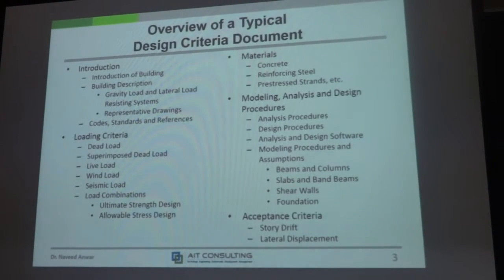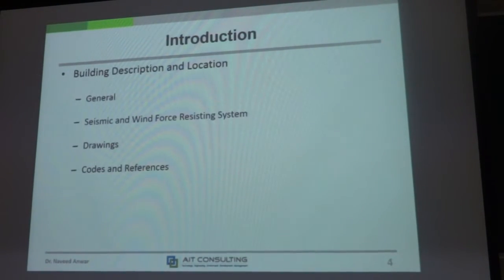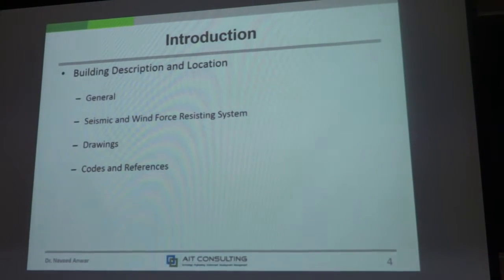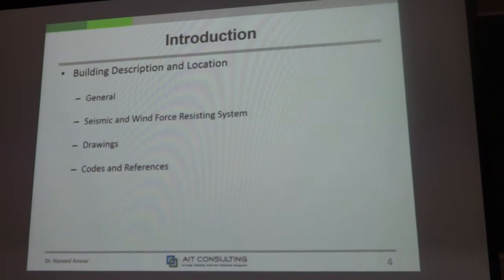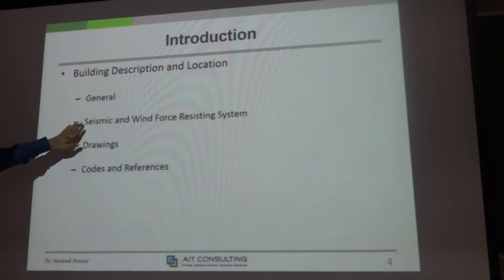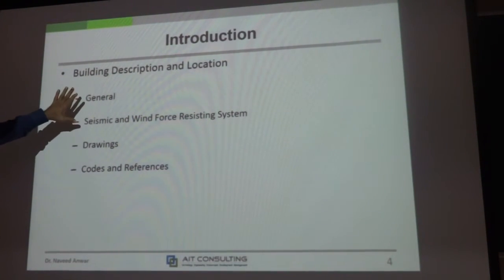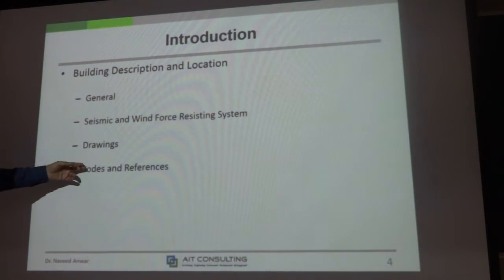Design criteria looks something like this. First, introduction to the building — building description and location. This is important because it will determine the wind loading, earthquake forces, and other location-based information like geotechnical data. That's why it is important to describe the building, where it is located, and what seismic and wind force-resisting systems you will use. Codes and references will also go there.